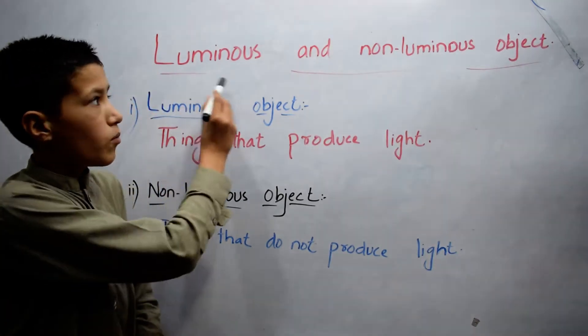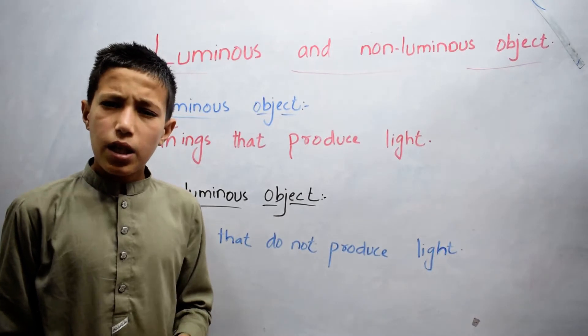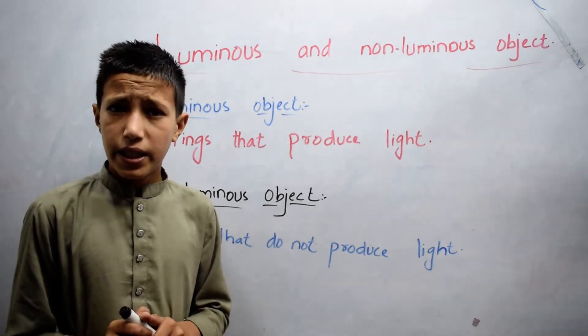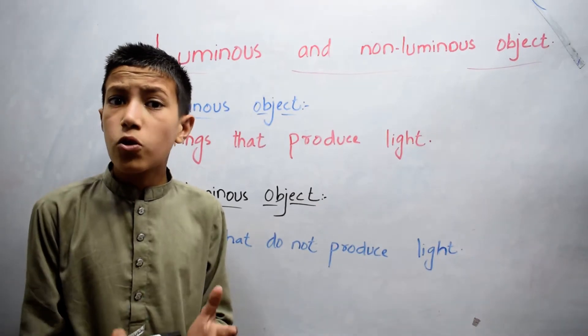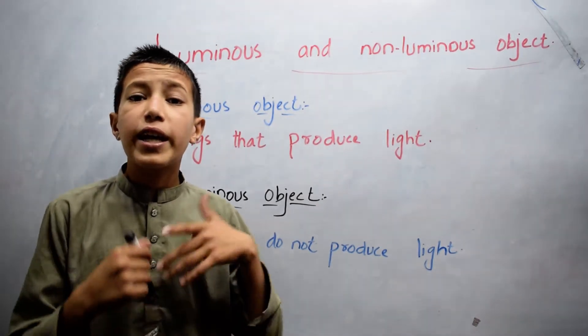Let's talk about luminous and non-luminous objects. A luminous object is one that gives off light. In other words, it glows on its own. It means that it is shiny on its own.